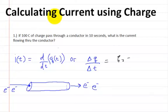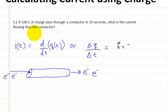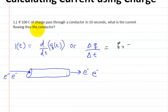This video is on calculating current using charge. Here's the problem: if 100 coulombs of charge pass through a conductor in 10 seconds, what is the current flowing through the conductor?